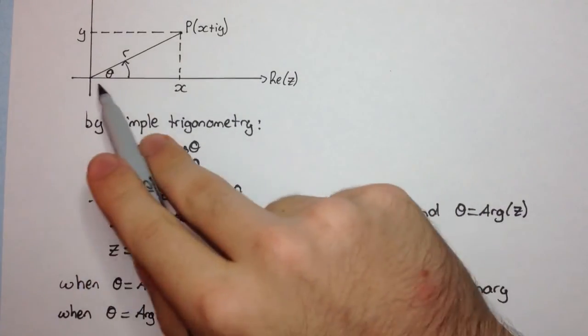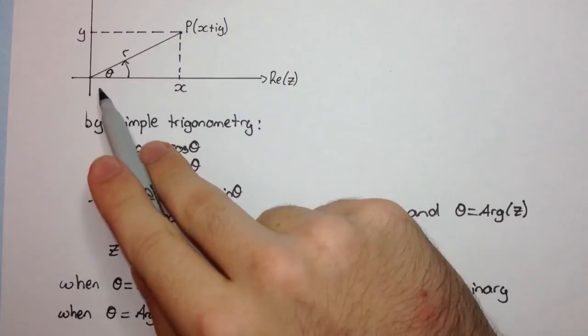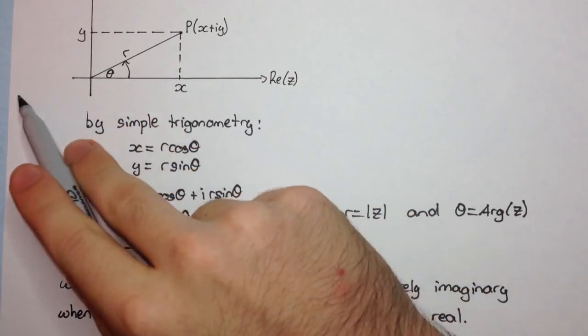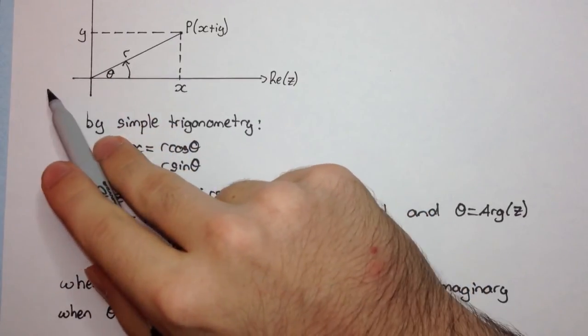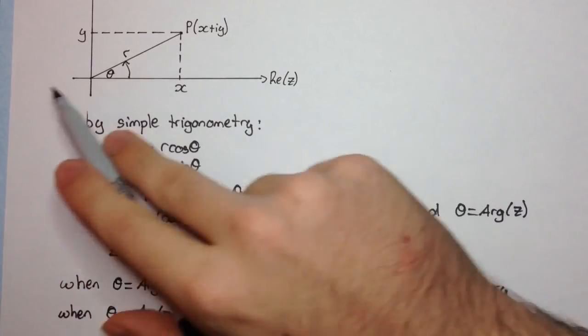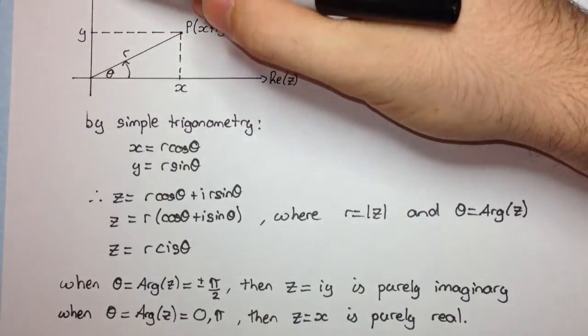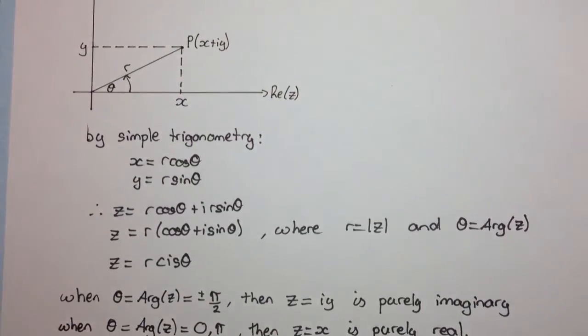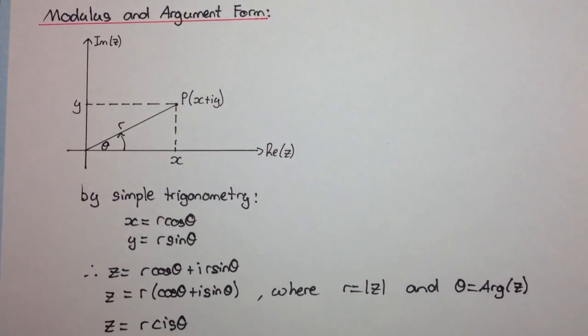And if theta is equal to pi, then we have our negative real numbers. So this here is our regular real number line, and this is the imaginary number line. Together, they form the argand diagram.